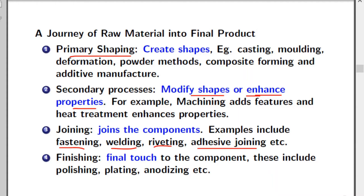The last set of processes give the final touch to the component. These include polishing, plating, anodizing, and so on. So these are roughly the four classifications: primary shaping, secondary processes, joining, and finishing. Let's get into the details now.